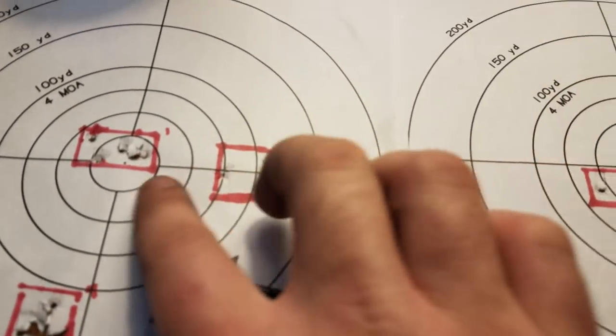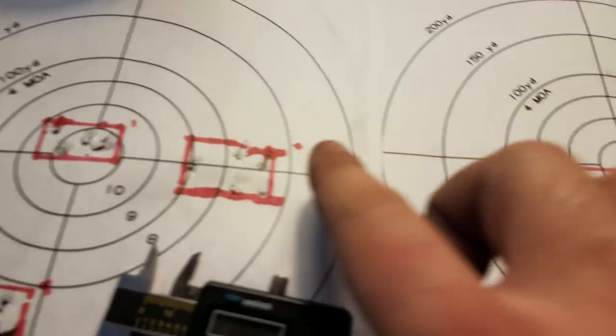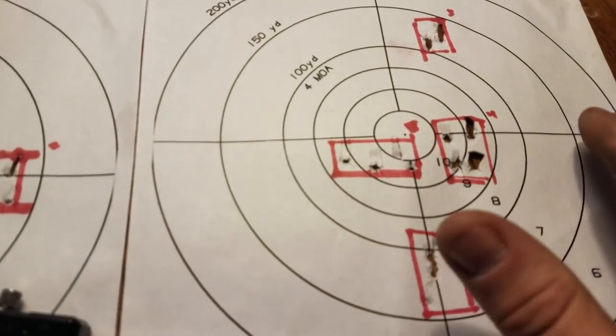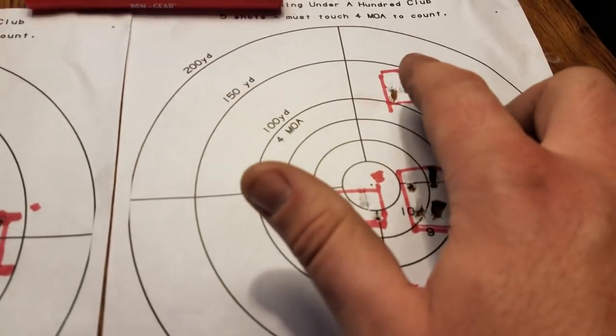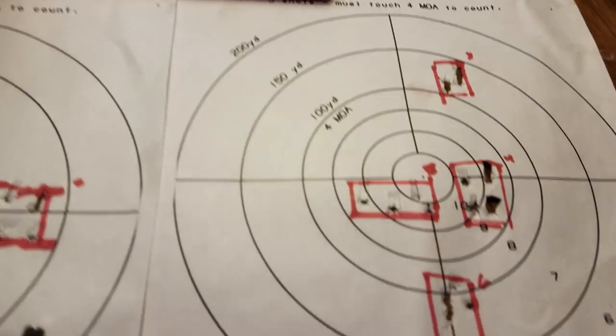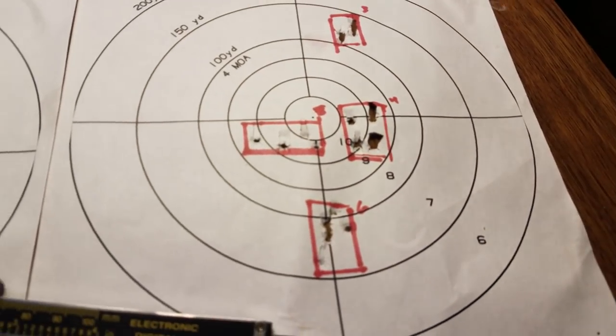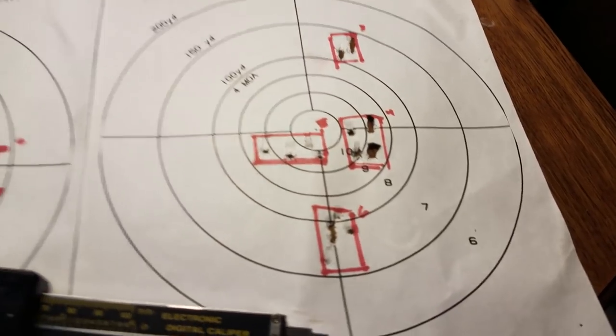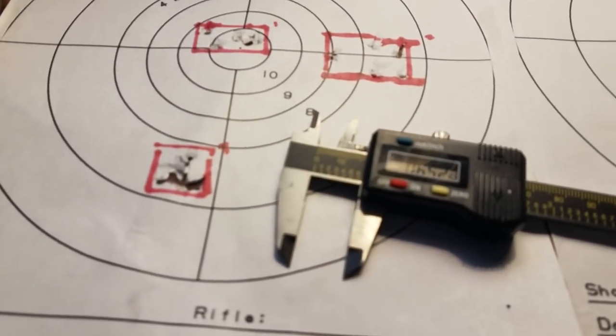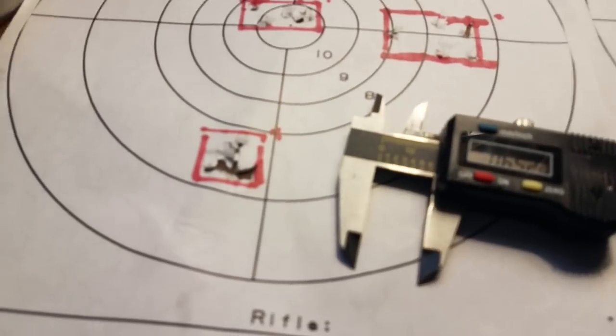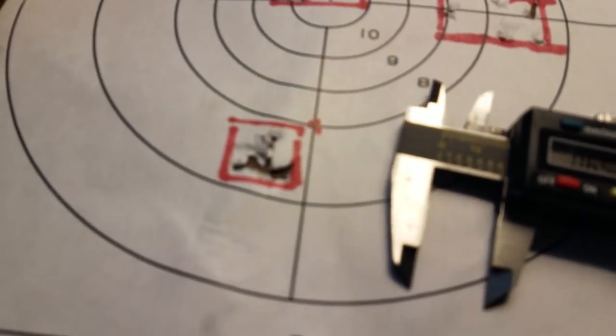If I would have aimed here, it should have landed over here, but instead it landed up there. So something changed when I added that lube. I don't know if it actually made it more accurate.